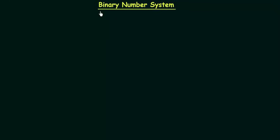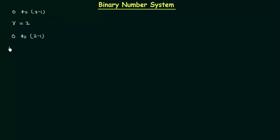The base in case of the binary number system is equal to 2 — the base or radix r is equal to 2. So we have digits from 0 to r−1, which gives us 0 and 1. There are two digits in the binary number system: 0 and 1. These binary digits are also called bits.